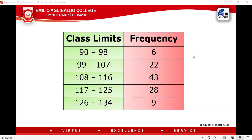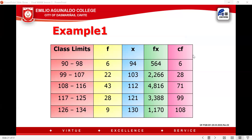The frequencies are 6, 22, 43, 28, and 9, and the total frequency is 108. For the third column, X stands for the class mark. To get X: 90 plus 98 divided by 2 gives 94; 99 plus 107 divided by 2 gives 103; 108 plus 116 divided by 2 gives 112; 117 plus 125 divided by 2 gives 121; and 126 plus 134 divided by 2 gives 130.